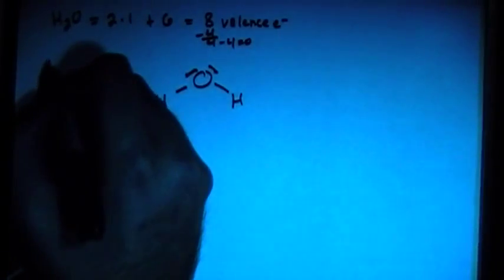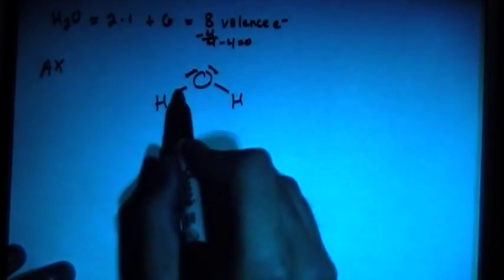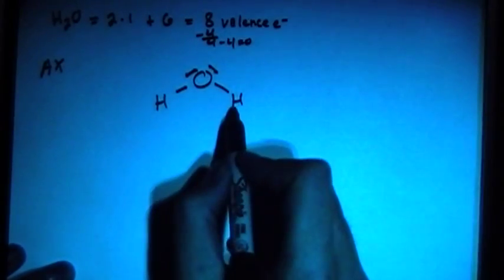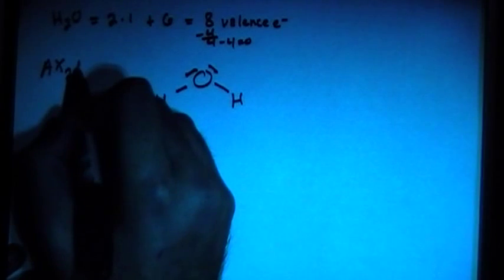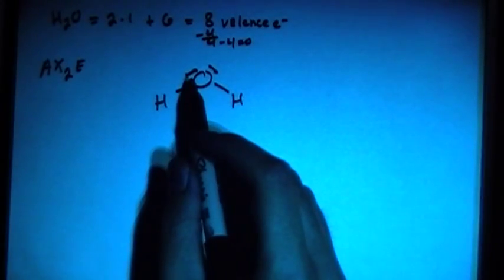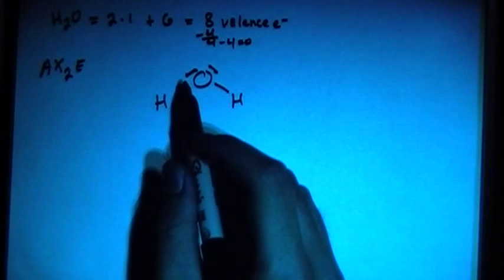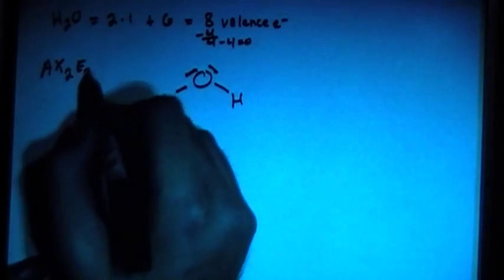It has A, X, now there's 2 hydrogen atoms attached, so it's AX2, and there's also 2 electron pairs that are attached. So that means it's going to be AX2E2.